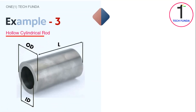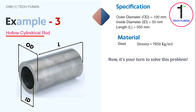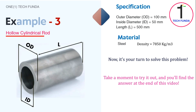Now let's look at the third example: a hollow cylindrical rod. The specifications are — outer diameter is 100 mm, inside diameter is 50 mm, and length is 500 mm. Material is steel. Now it's your turn to solve this problem. Calculate the weight of this hollow cylindrical rod using the given data. Take a moment to try it out, and you'll find the answer at the end of this video.